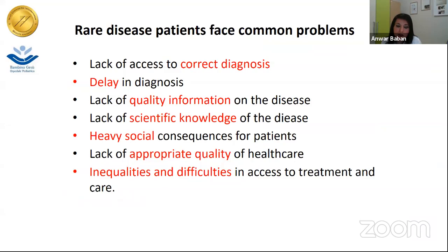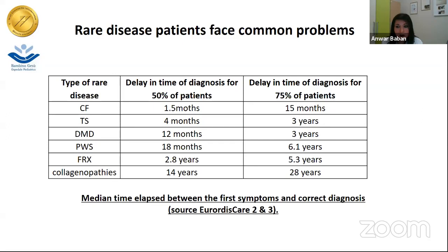Lack of scientific knowledge leads to heavy social consequences for patients. There are also inequalities and difficulties in access to treatment and care. One of the main problems is that patients with rare diseases face a delay in diagnosis — sometimes not months but years. For example, in DMD patients or even in patients with Prader-Willi syndrome, it may take years to get the diagnosis.